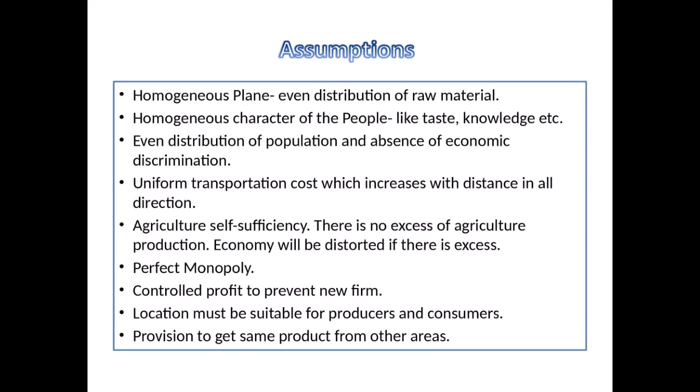The fourth assumption he has made is about transportation cost. He says that the transportation cost should be uniform throughout the homogeneous plane, and the transportation cost will increase from the city center to the outer space. The next assumption is that there should be agricultural self-sufficiency, and there should not be excess production in agriculture, as excess in agriculture has a chance of distorting and disturbing the economic condition of the locality.